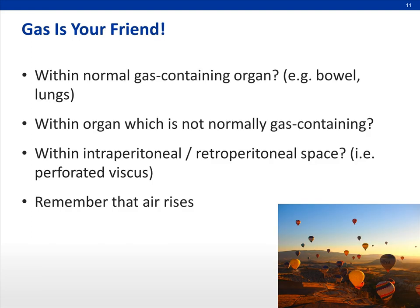One important principle is that gas is your friend. You should make full use of it, because it can tell you a lot of information. Firstly, it can tell you where the normal gas-containing organ is, such as the bowel or the lungs. Secondly, it can identify where pathology is — if gas is within organs that do not normally contain it, that may be where the abnormality is. Third, if there is a perforated viscus with extra-luminal air, you may want to identify whether it is intraperitoneal or retroperitoneal. Remember that air is very light, so it will always rise. Depending on whether the x-ray is taken in a supine or erect position, air can appear very differently.